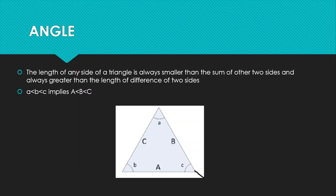Another important point is that the length of any side of a triangle is always smaller than the sum of the other two sides. This means that if we have three sides a, b, c, then a will always be smaller than the sum of b plus c.